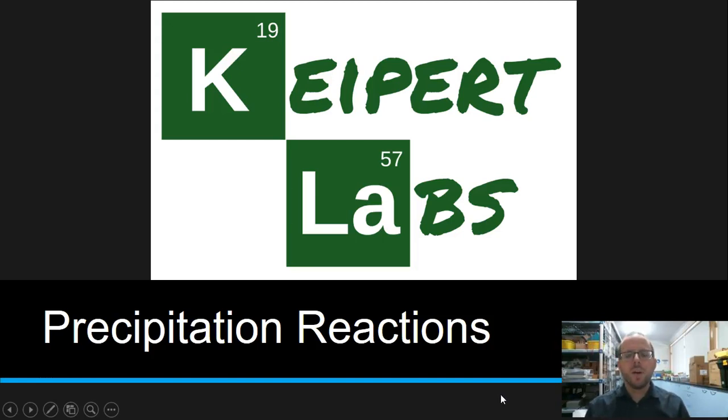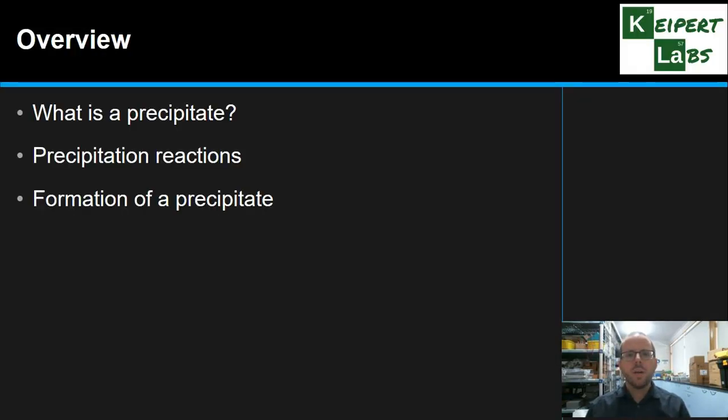Hi everyone, welcome to this episode of Kaiput Labs. In today's video we're going to be talking about precipitation reactions. We're going to define what we mean by a precipitate, look at this process of a precipitation chemical reaction, look at how a precipitate actually forms in terms of the physical steps, and then introduce a technique that we use to describe these precipitation reactions called a net ionic equation.